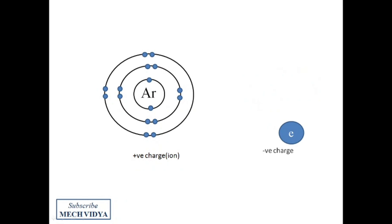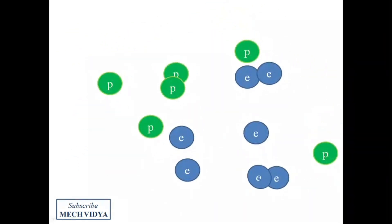Now when millions of these positive and negative ions collide like this, an ionized channel is formed and it becomes electrically conducting. This state of matter is called plasma.